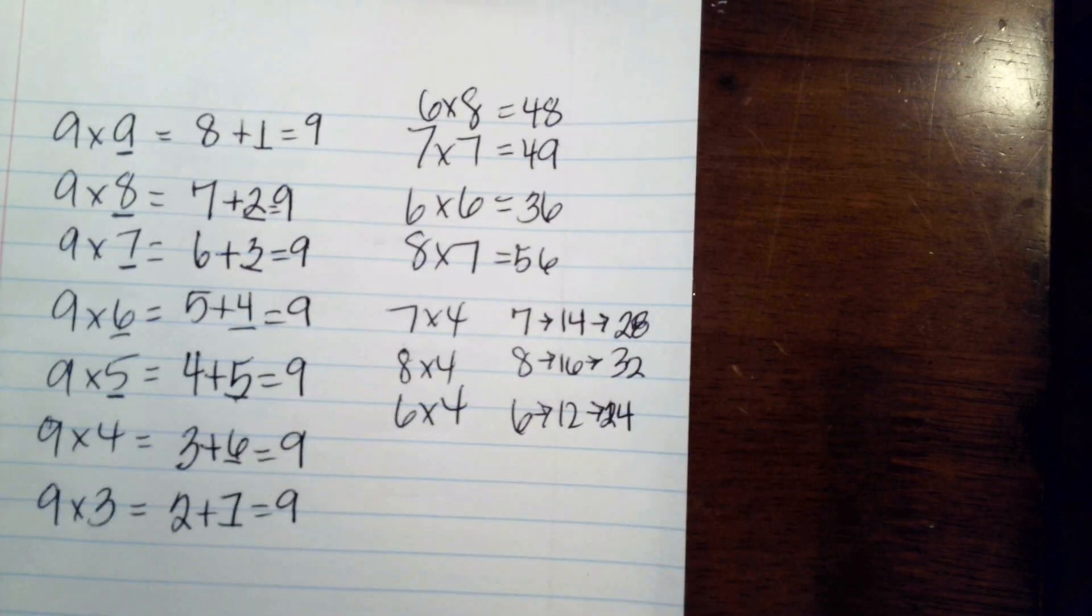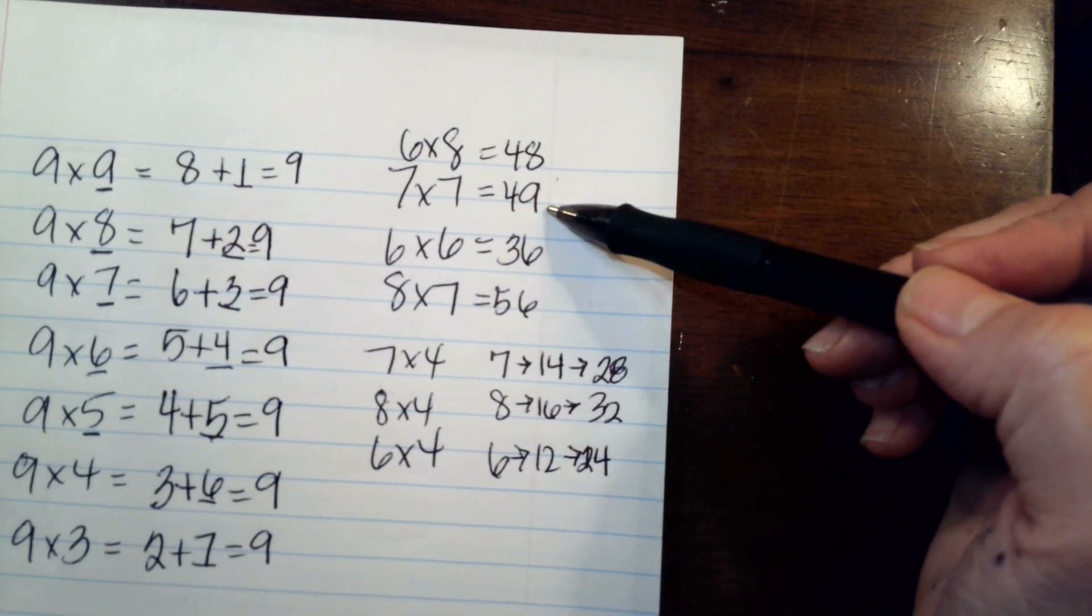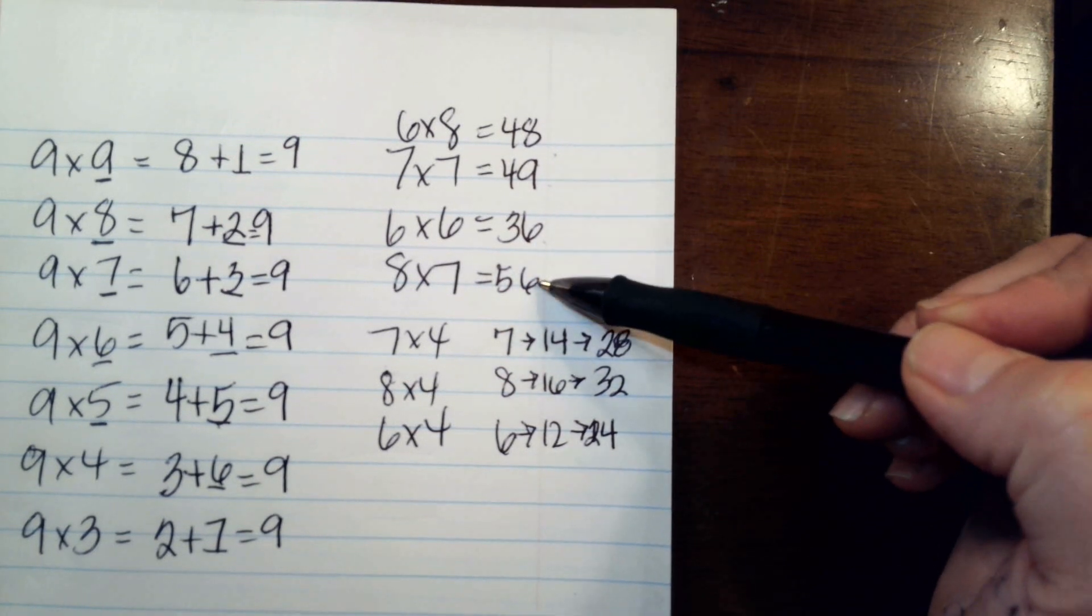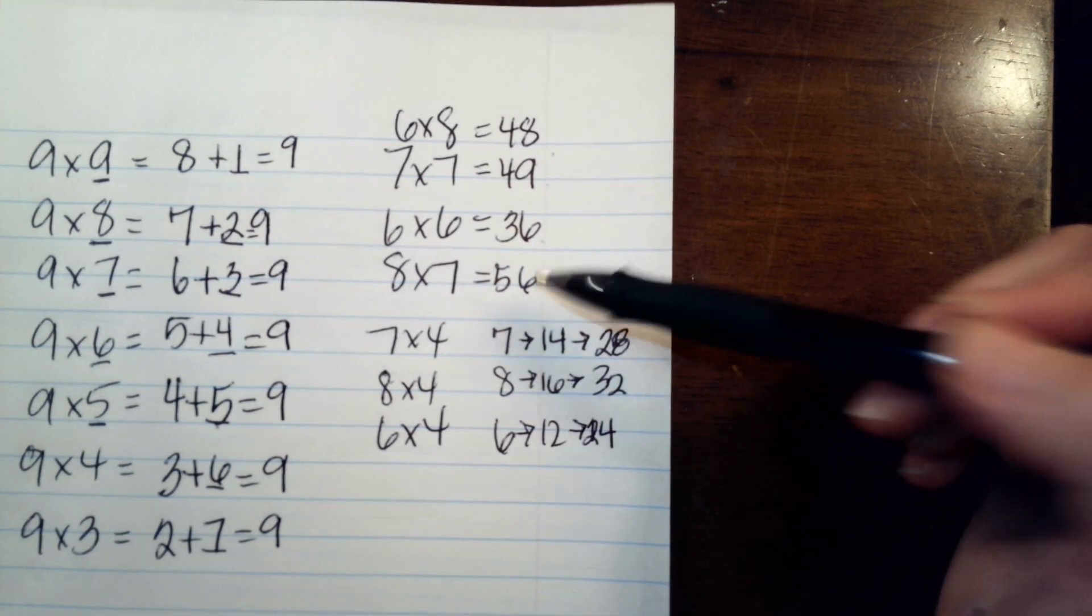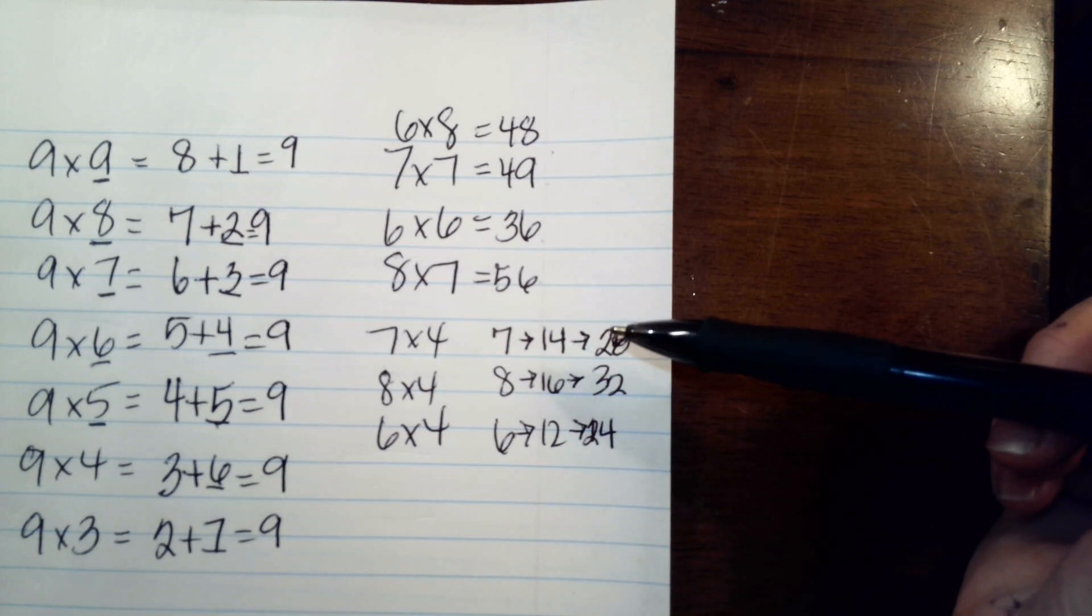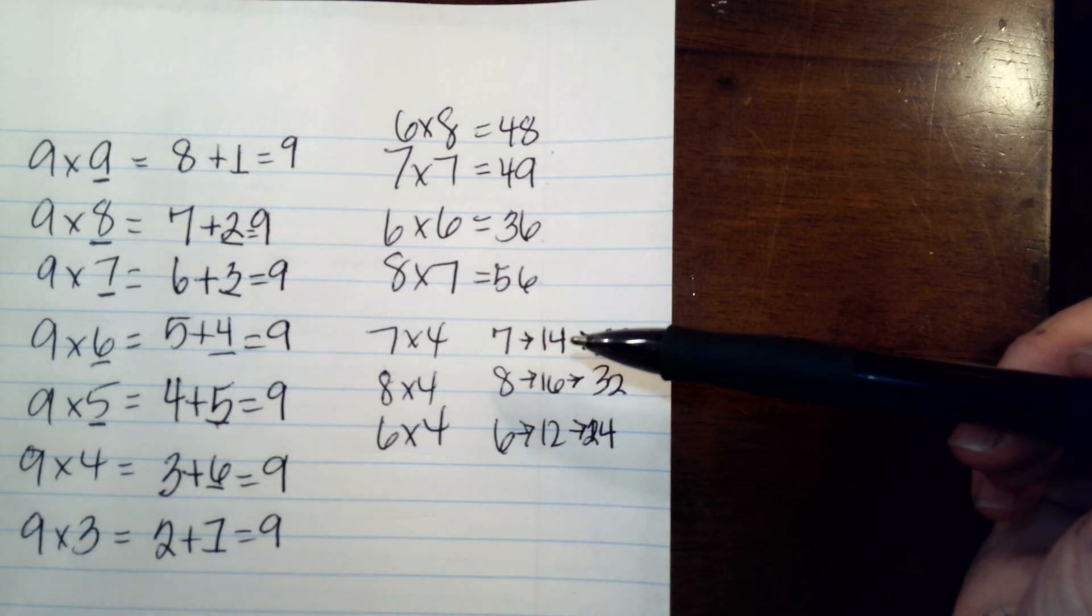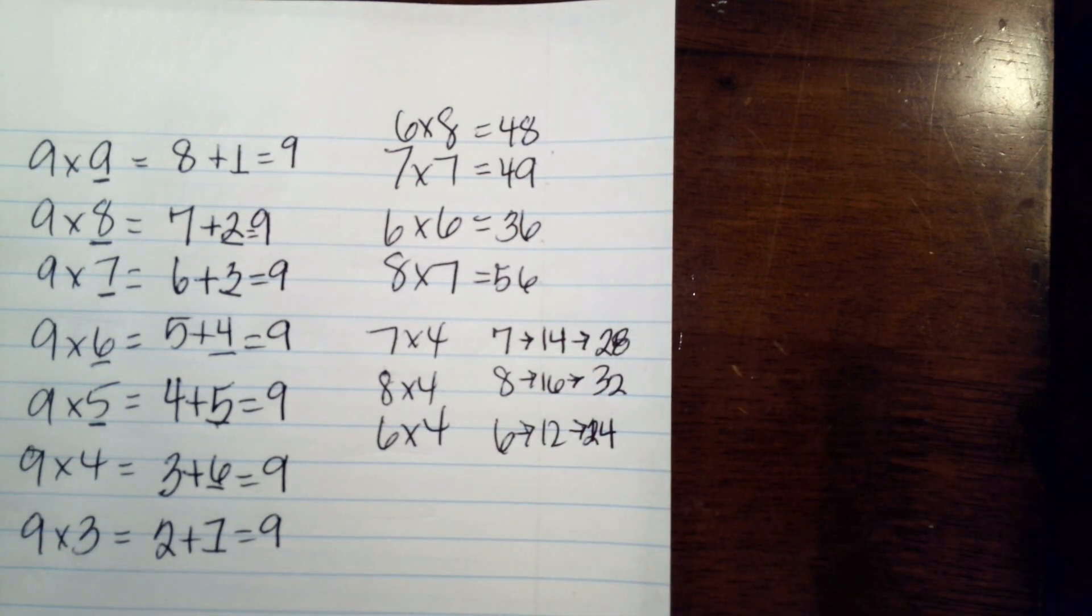So, we have six times eight is forty-eight, seven times seven is forty-nine, six times six is thirty-six, eight times seven is fifty-six, seven times four, we double seven and we double it again, twenty-eight. We double eight and we double it again, thirty-two. We double six, we double it again, twenty-four.